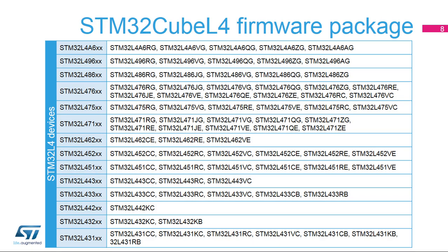STM32 Cube offers a highly portable hardware abstraction layer, or HAL, built around a generic architecture. It allows developers to implement application functions by building on layers, such as the middleware layer, without requiring any in-depth knowledge of the MCU used. This improves the reusability of the library code and guarantees an easy portability to other devices. In addition, thanks to its layered architecture, the STM32 Cube L4 offers full support of all STM32 L4 microcontrollers. The user has only to define the correct macro in the STM32 L4-XX.h file.